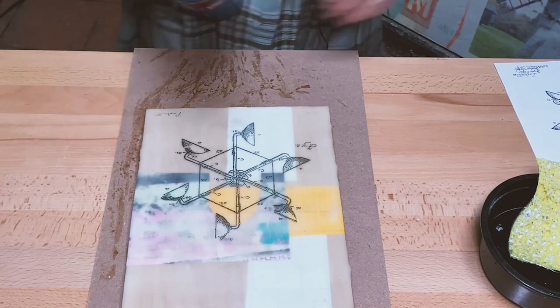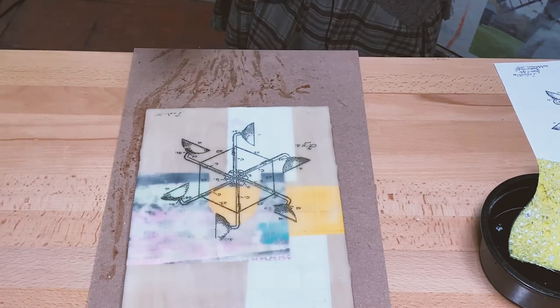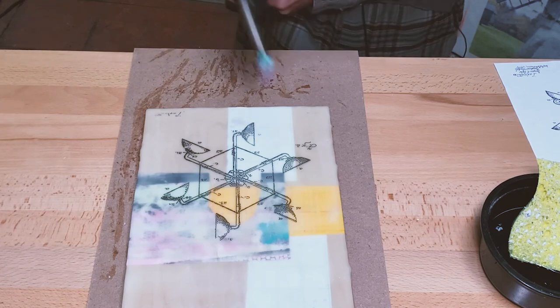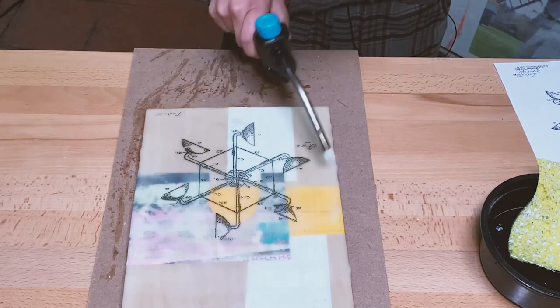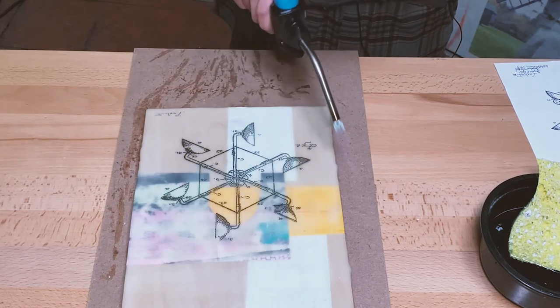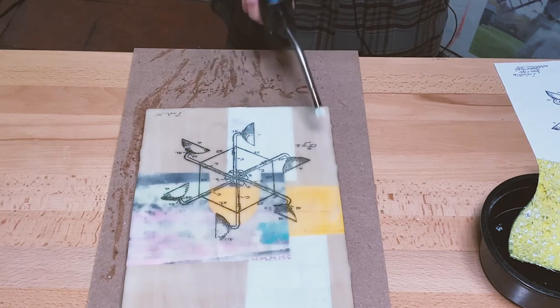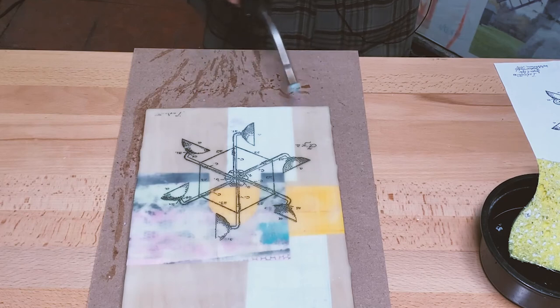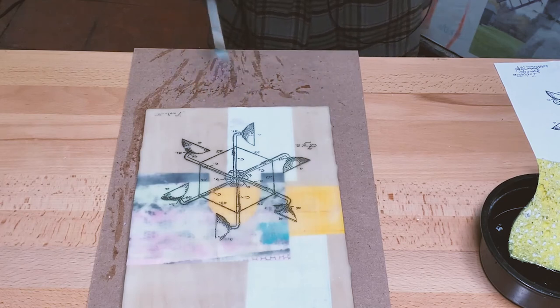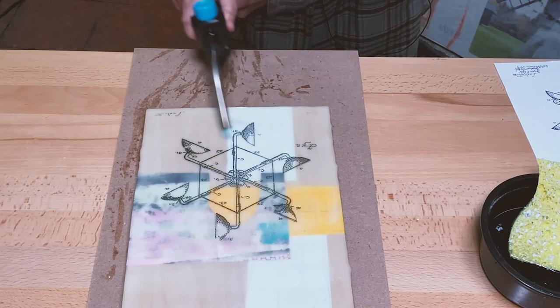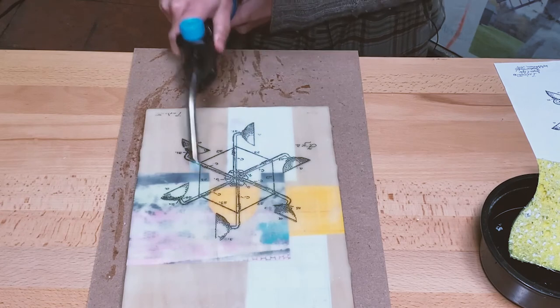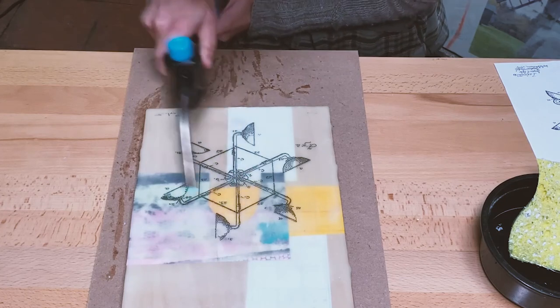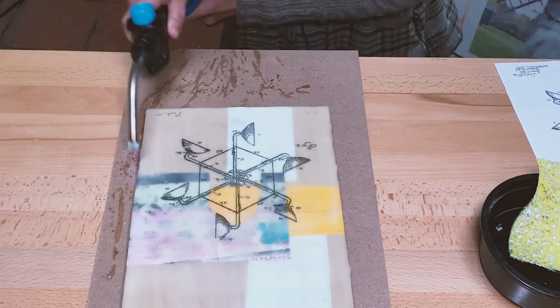So then we take our torch and make it go way down so that we can just barely see some of those areas with the paper will go from matte to shiny. And that's because they're just melting into the surface of the wax. But you want to be very delicate with your torch work here.